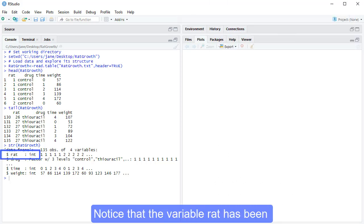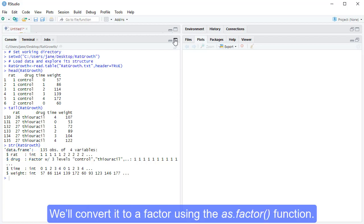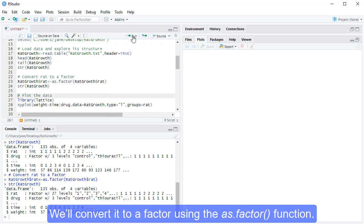Notice that the variable rat has been read into R as an integer rather than a factor. We'll convert it to a factor using the as.factor function.